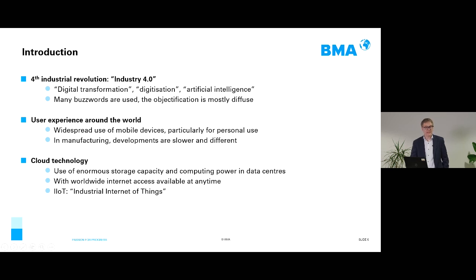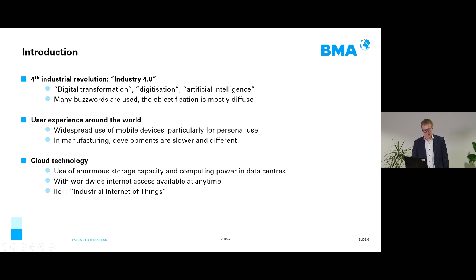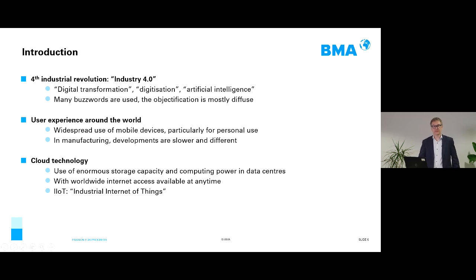There is an additional term more often used in manufacturing: the Industrial Internet of Things — IIoT. Unlike IoT, IIoT does not focus on consumers and end users, but on industrial applications. It includes the digital representation of the processes, the products, and the manufacturing infrastructure.